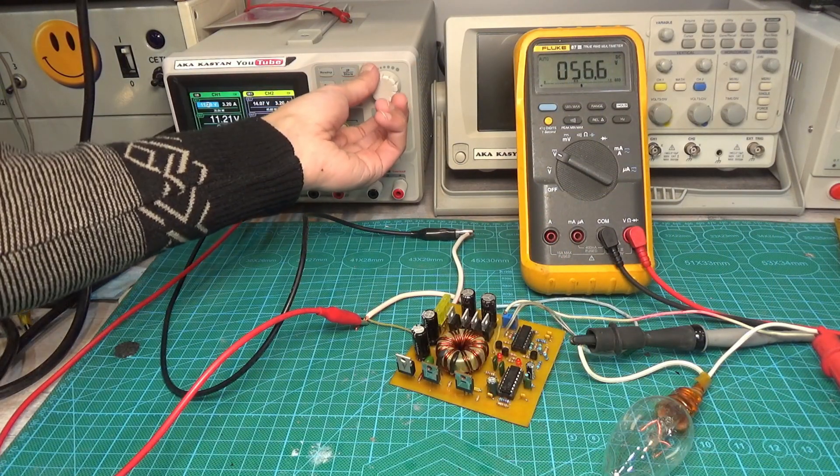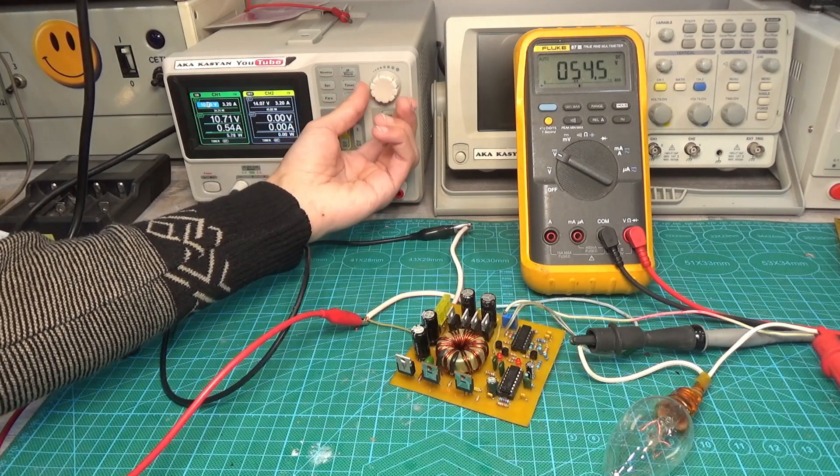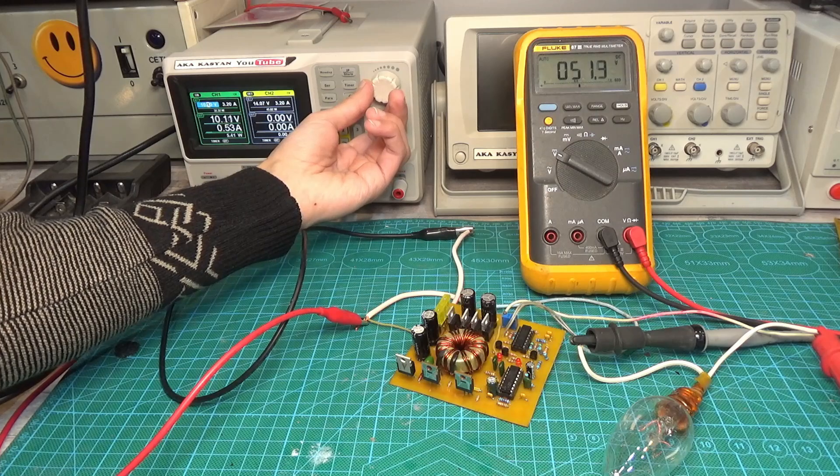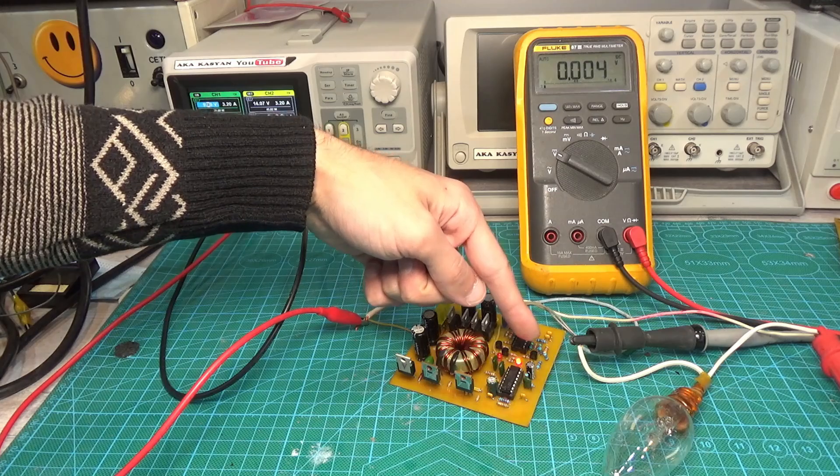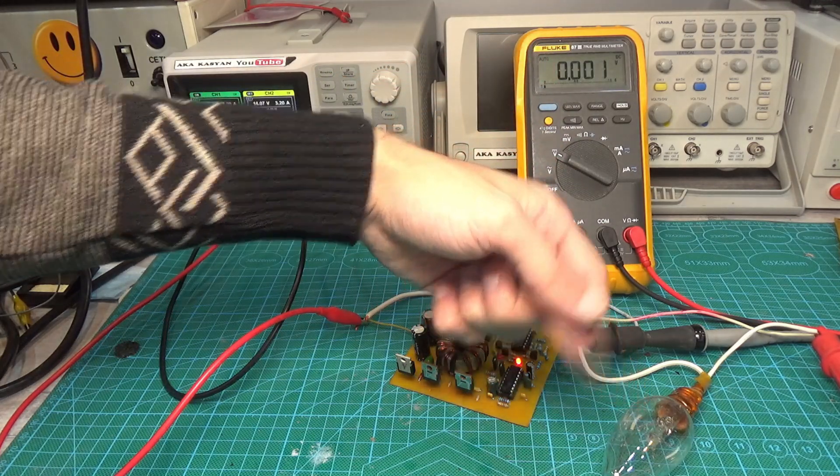The adjustment of protection systems can be done without installed power transistors and a transformer. To do this, about 12 volts are supplied to the input of the inverter and slowly lowered to simulate a discharge of the battery. The protection should work at a voltage of about 10 volts. The corresponding indicator will light up.